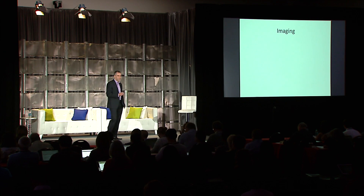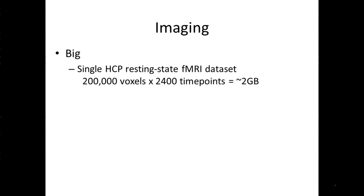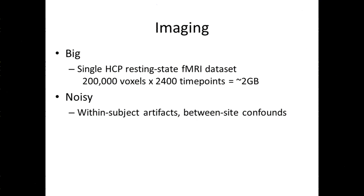Before looking at imaging genetics, let's break it down into the two separate components. Imaging can certainly be big — a single resting state fMRI data set, which is one of about six or seven acquired in each Human Connectome Project subject, can be on the order of two gigabytes in size. But imaging is also quite noisy. There are a number of different sources of artifacts: within-subject artifacts, between-site confounds, among others.